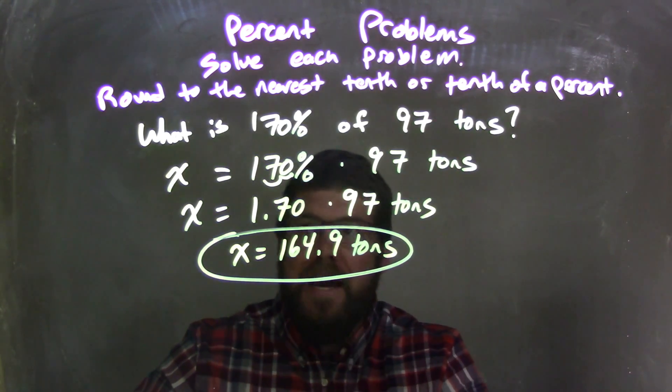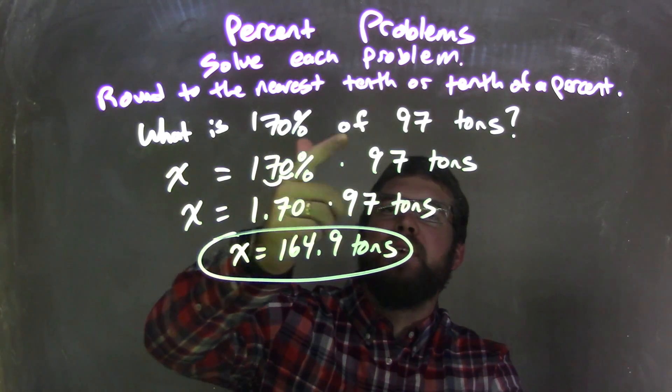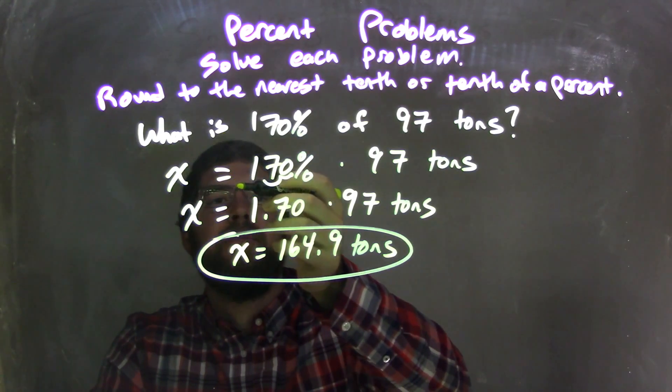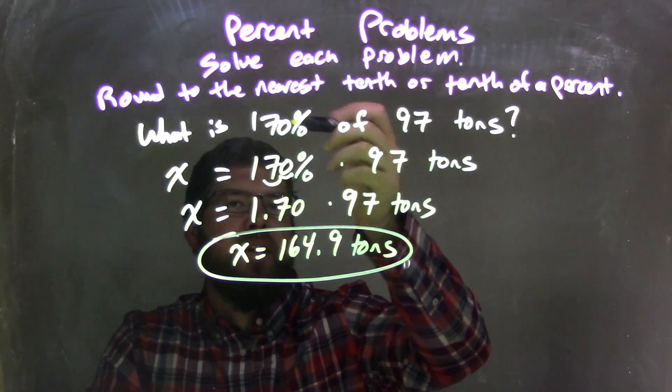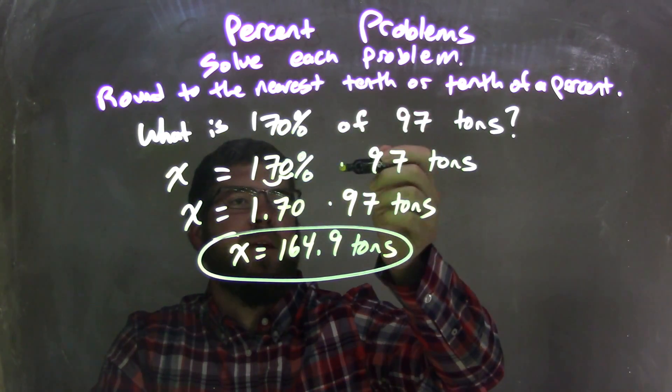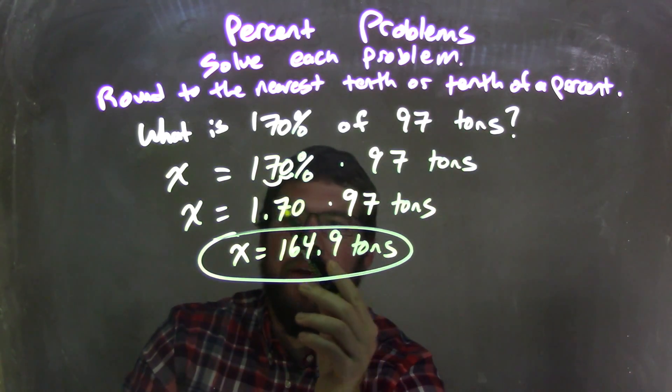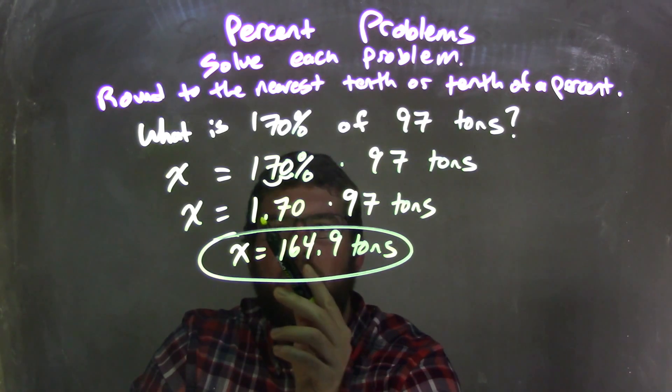So let's recap from the beginning. We have: what is 170% of 97 tons? X is my what, is is equal sign. We're writing this as an equation here: 170% of multiplication, 97 tons. Then I converted my percent to a decimal, 170% is 1.70.